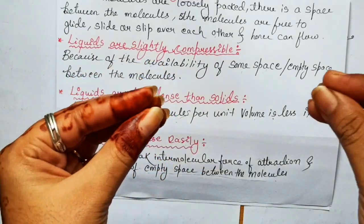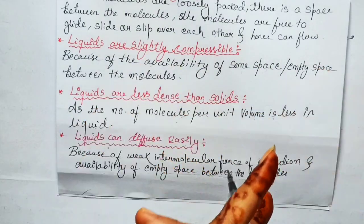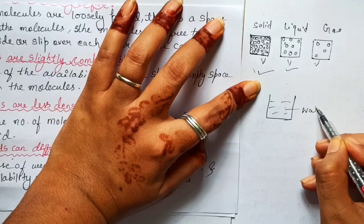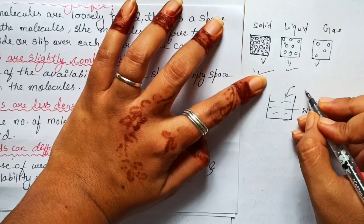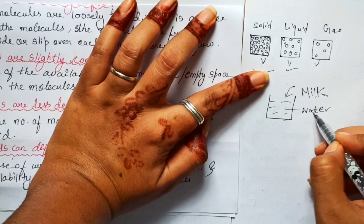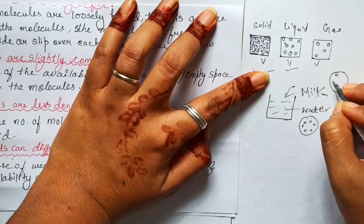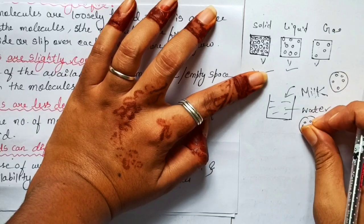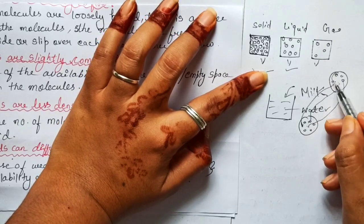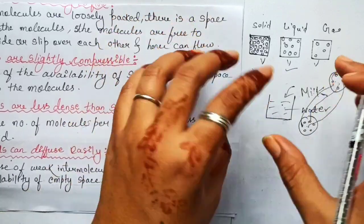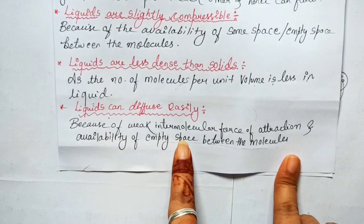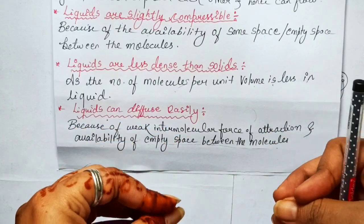The last point: liquids can diffuse easily. Diffuse — I have already taught you what it means. For example, here I have water, and I am adding milk to it. Both are liquids. When I add milk and water together, molecules of one liquid enter the intermolecular spaces of the other. Both liquids mix through their intermolecular spaces. That is why they diffuse. The simple reason is: because of the availability of empty space between the molecules, the molecules can easily diffuse.